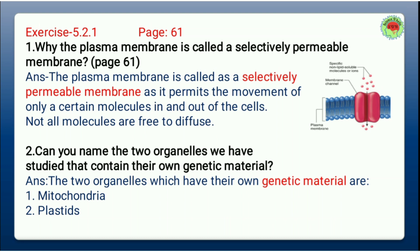Question number one: Why is the plasma membrane called a selectively permeable membrane? The plasma membrane is called a selectively permeable membrane because it permits the movement of only certain molecules in and out of the cell — not all molecules are free to diffuse. It is selective in nature, allowing only certain molecules to pass through it.